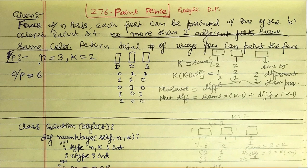Let's say we have three posts and we have a choice of two colors, so k equals two. We can paint them in various combinations: 0-0-1, 0-1-1, 1-0-0, 1-0-1, 0-1-0, 1-1-0, and so on — enumerating all valid cases.